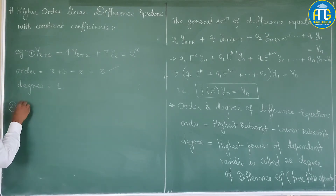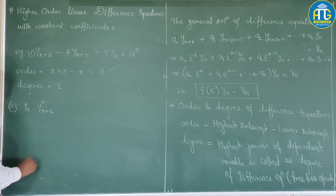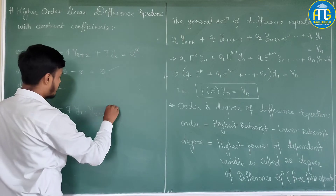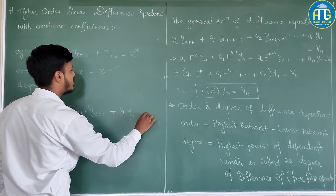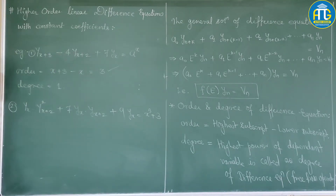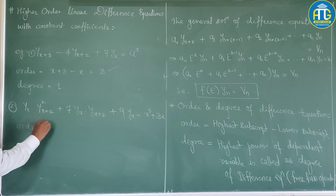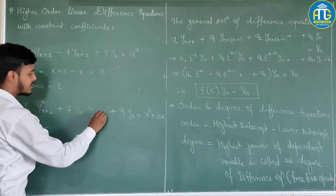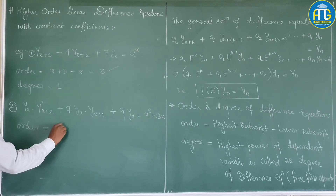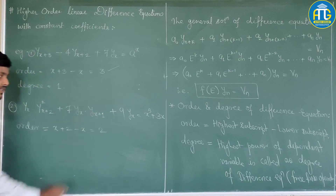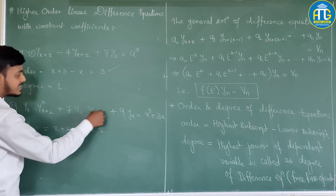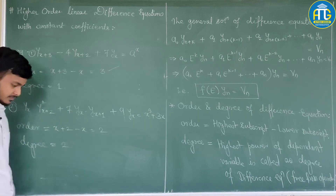One more example: y(x) · [y(x+2)]² plus 7 y(x) · y(x+2) plus 9 y(x) equals x³ plus 3x. The highest suffix is x+2 and the lowest is x, so the order is 2. For degree, the highest power of the dependent variable y here is 2 (from [y(x+2)]²). So degree is 2.